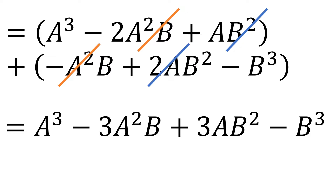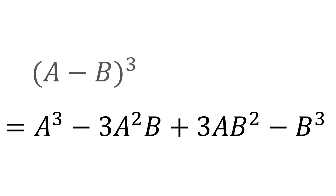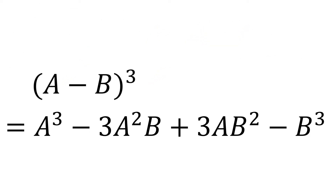So therefore, the cube of (a minus b) is equal to a cubed minus 3a squared b plus 3ab squared minus b cubed. Using this formula, we can quickly find the cube of the difference of two terms without using the FOIL method or the distributive property in general.